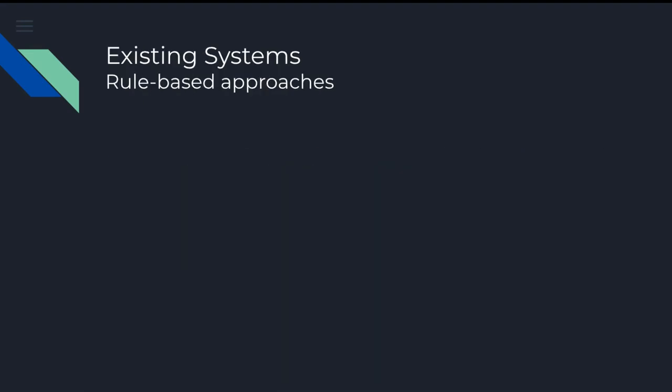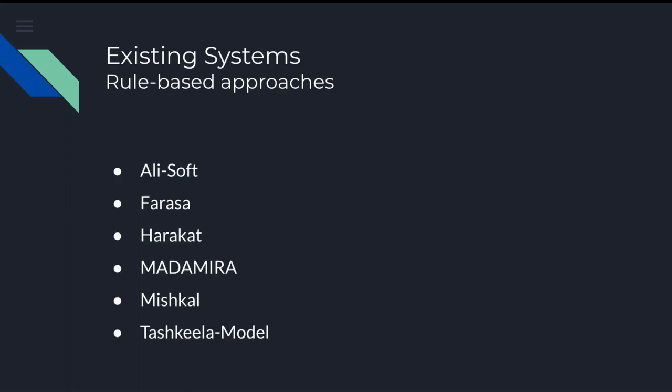Just by searching the internet for Arabic text diacritization, one can find multiple online services. Most of them are closed source and generally rule-based. In this work, we reviewed six rule-based systems: AliSoft, Farasa, Harakaat, Madamira, Mishkal, and Tashkila model, all of which had issues with their output.